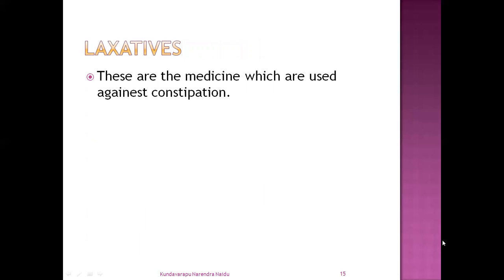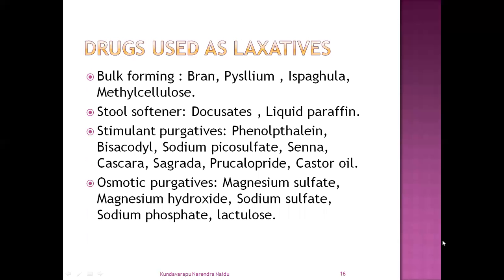Next: laxatives. Laxatives are medicines mainly used against constipation — that is, digestion problems. The first class are bulk-forming drugs: bran, psyllium, ispaghula, and methylcellulose. And stool softeners, which soften the stool: docusates and liquid paraffin. And stimulant purgatives: phenolphthalein, bisacodyl, sodium picosulfate, senna, cascara sagrada, prucalopride, and castor oil. And osmotic purgatives: magnesium sulfate, magnesium hydroxide, sodium sulfate, sodium phosphate, and lactulose.